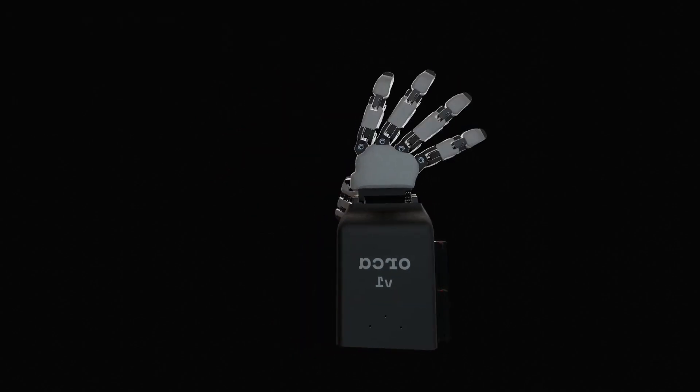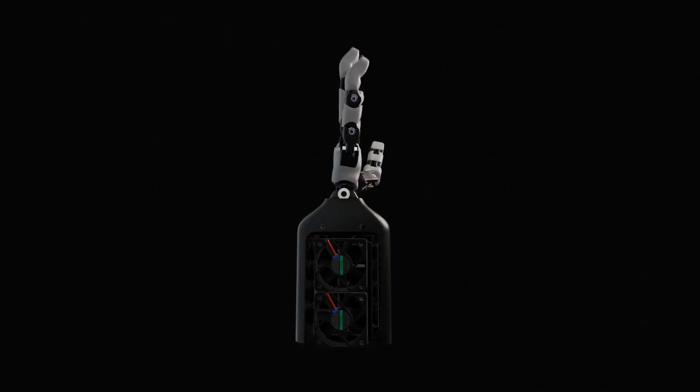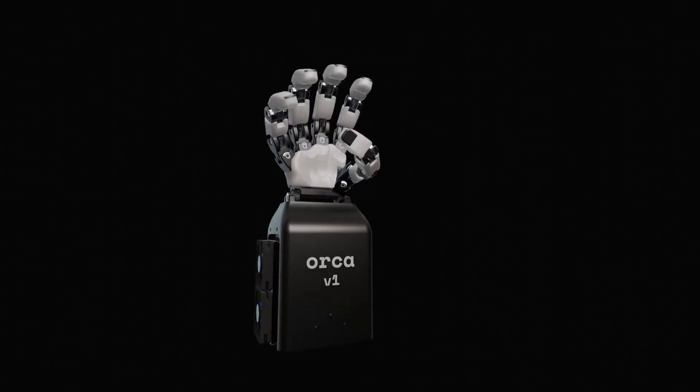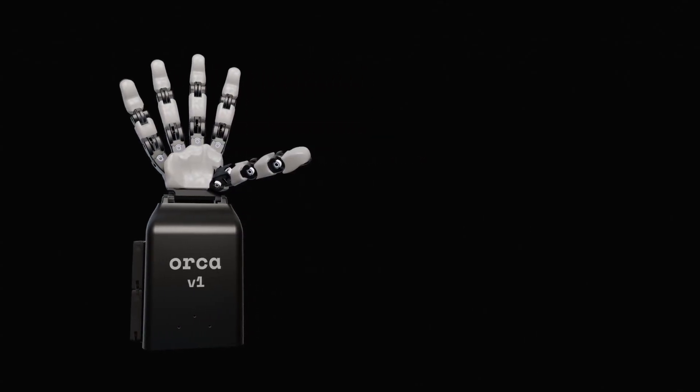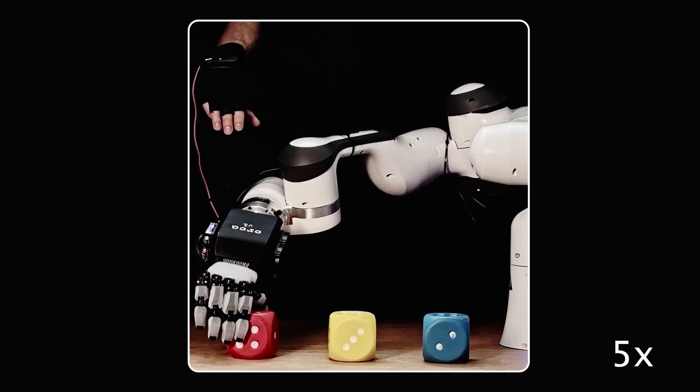After successful assembly of the Orca hand, an auto-calibration step will be performed. By testing the maximal allowed joint angles, the hand is afterwards ready for precise movement control.